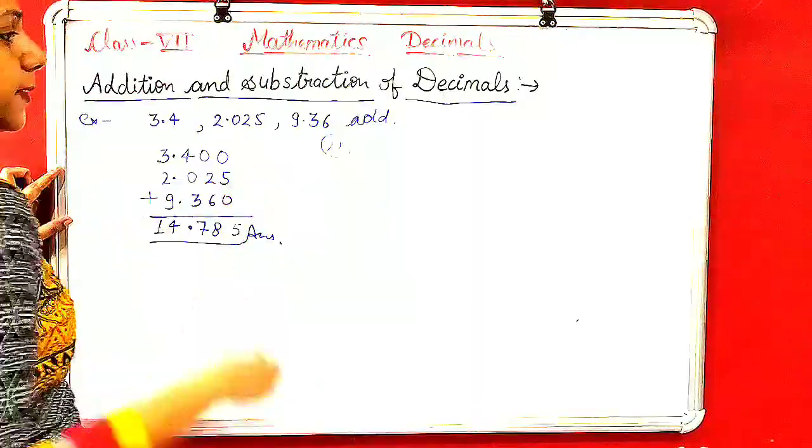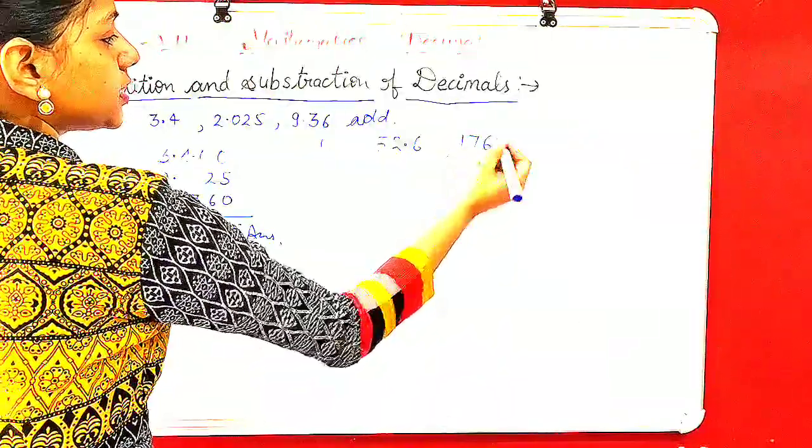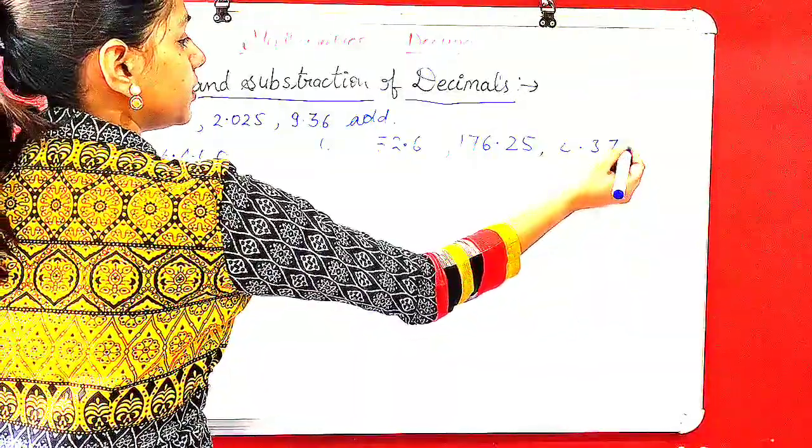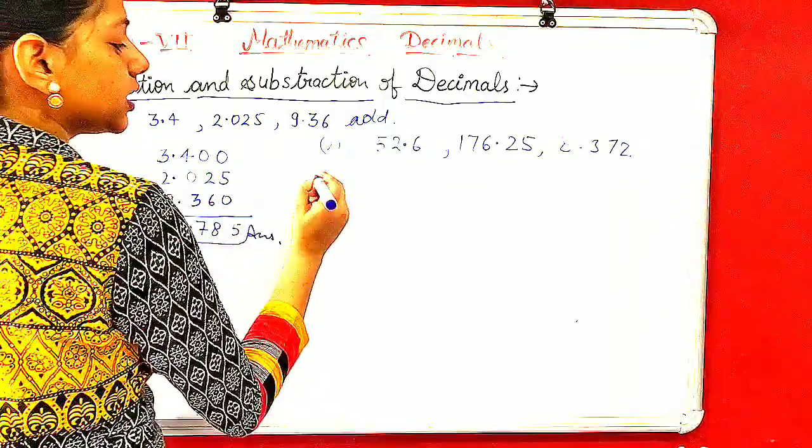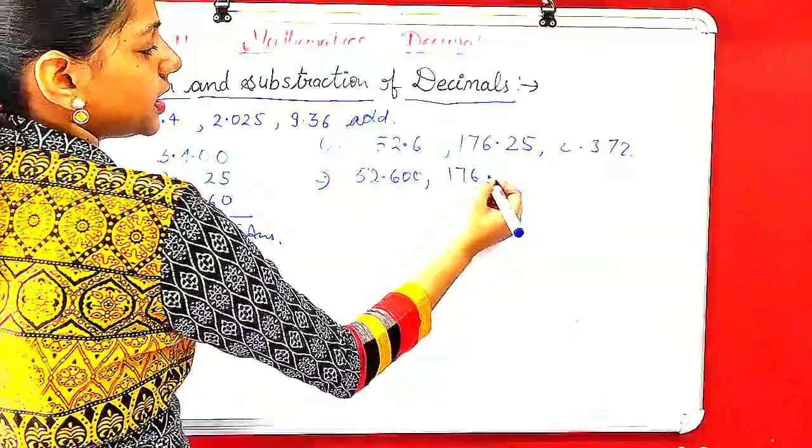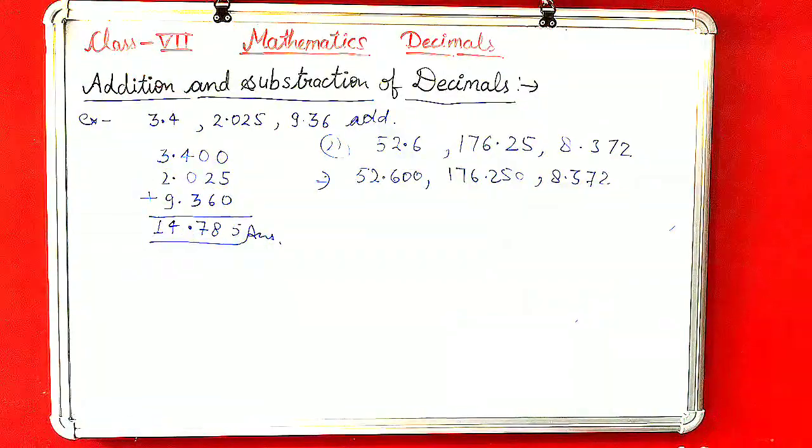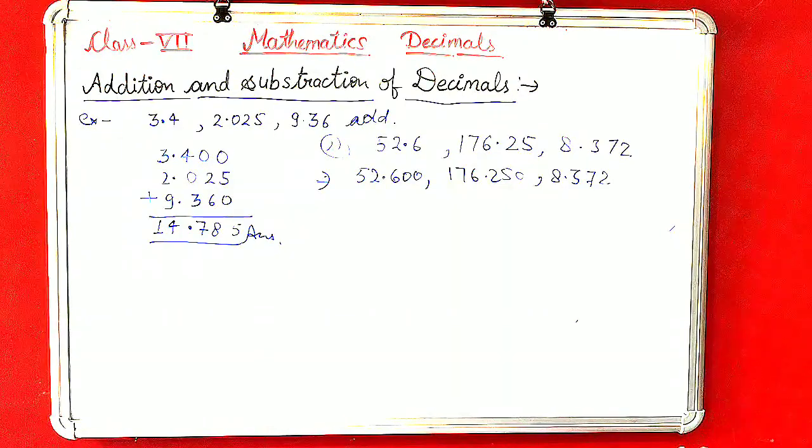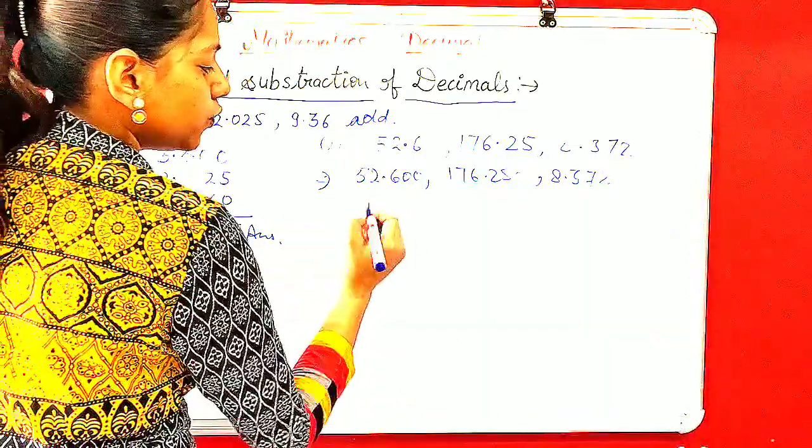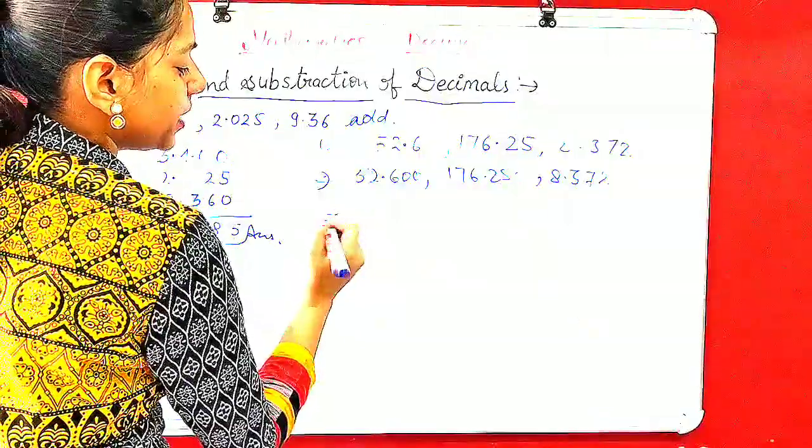For another example, let's take 52.6, 176.25, and 8.372. First convert to like decimals: 52.600, 176.250, and 8.372. To add correctly, write numbers in descending order: 176.250, then 52.600. Remember, always write numbers starting from the right side, unit place.